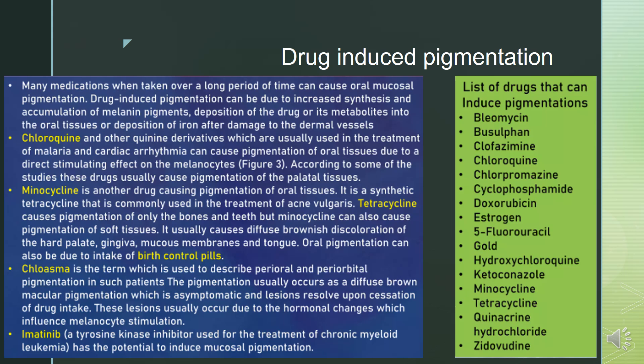Minocycline is another drug causing pigmentation of oral tissues. It is a synthetic tetracycline used in the treatment of acne vulgaris. Tetracycline causes pigmentation of only bones and teeth, but minocycline also causes pigmentation of soft tissues — usually a diffuse brownish discoloration of the hard palate, gingiva, mucous membranes, and tongue. Oral pigmentation can also be due to intake of birth control pills.